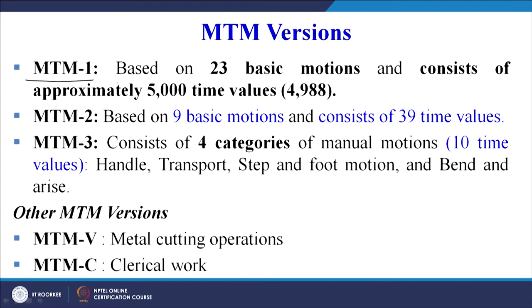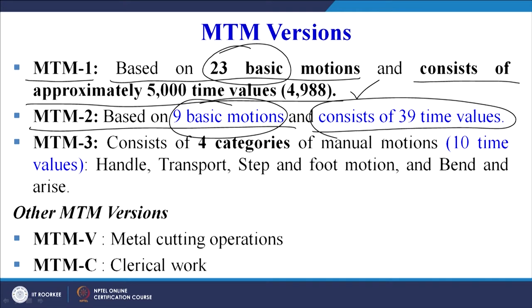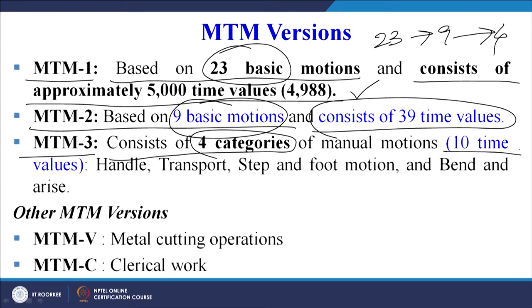MTM 1 (method time measurement 1) is based on 23 basic motions and consists of approximately 5000 time values. MTM 2 is based on 9 basic motions — some of the 23 have been combined — and consists of 39 time values. MTM 3 consists of 4 categories of manual motions: handle, transport, step and foot motion, and bend and arise, with only 10 time values.